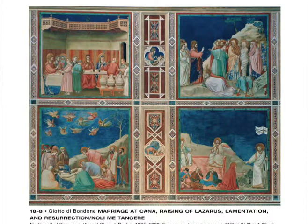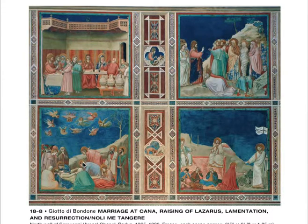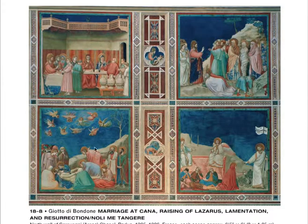Giotto is probably influenced by dramatic performances of scriptural text. He worked in the Church of St. Francis of Assisi, and his emphasis on human empathy and emotion probably came from his exposure to the Franciscans. He includes the range of emotions on these faces — there's a variety of emotional reactions to the death of Christ. He's observing human experience, observing different actual naturalistic facial expressions of human beings, depicting his dramas from the human world.